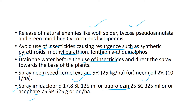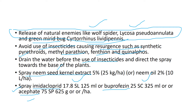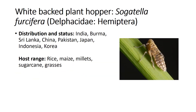Avoid use of insecticides causing resurgence such as synthetic pyrethroids, methyl parathion, fenitrothion, and quinalphos. Also release natural enemies like wolf spider Lycosa pseudoannulata and green mirid bug Cyrtorhinus lividipennis for biological control. Remembering six to seven basic points, you can clear whatever comes on BPH.